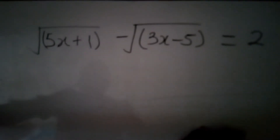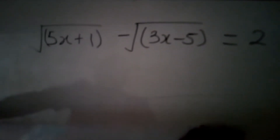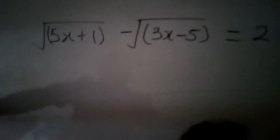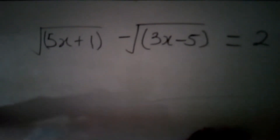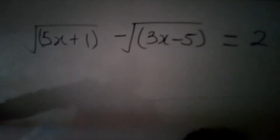We are asked to solve the equation: the square root of 5x plus 1, minus the square root of 3x minus 5, all equal to 2.